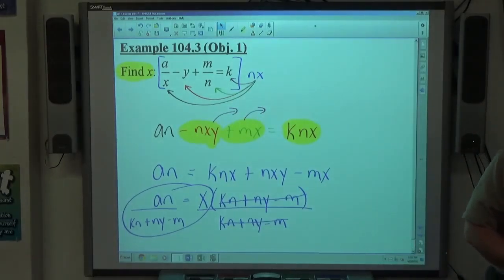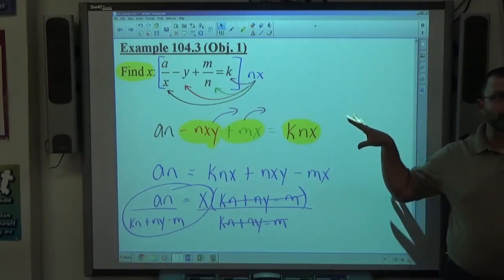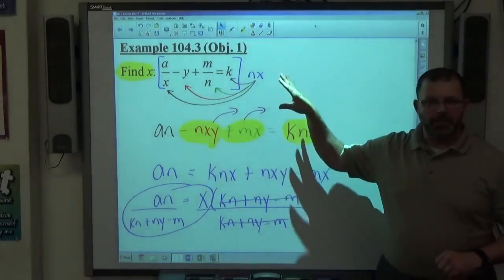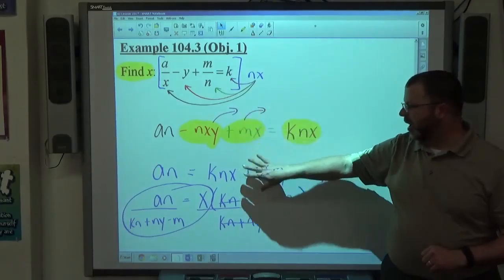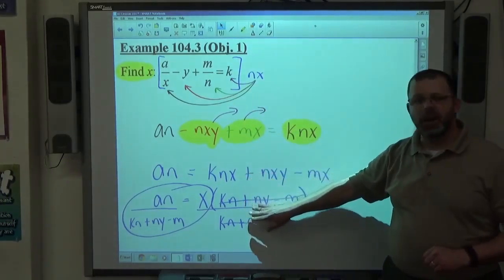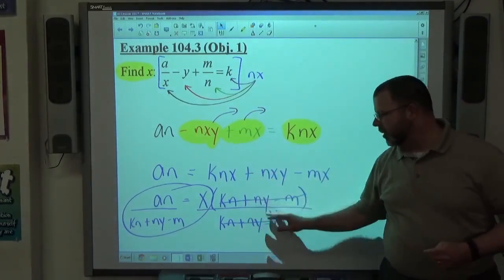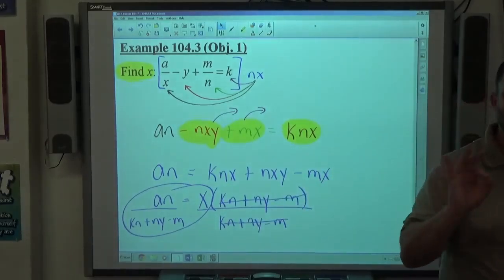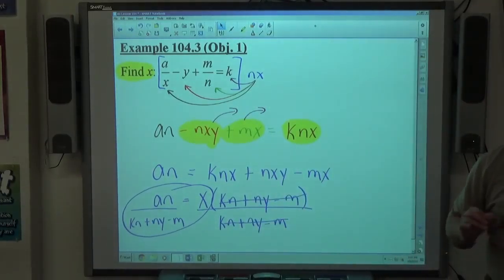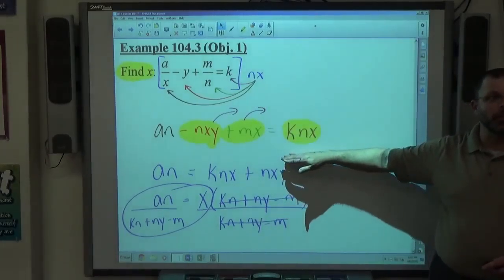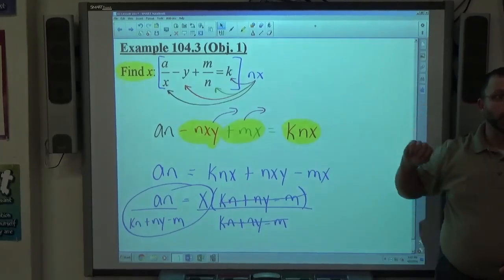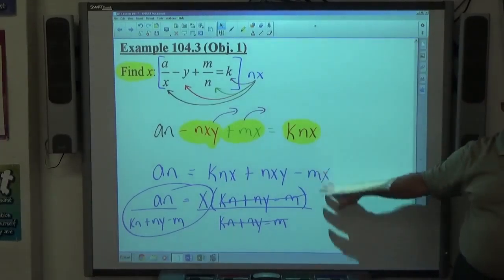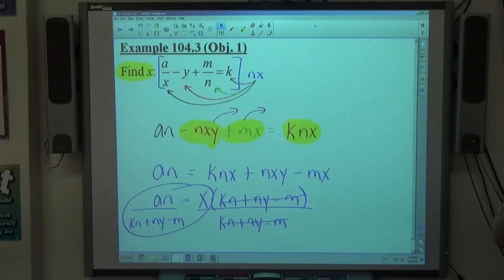These do become more challenging down the road. This is as basic as they're going to get for right now, but again, the basic theme is get rid of fractions, isolate the variable you care about, factor out the common factor that is that variable, divide by the stuff with it, and go through the process each time. Focus on each step as you do it, get really good at this. When we get to the uglier ones, they're still going to get to this same point right here every time. It's just a little uglier stuff going on before that. So once we get to here, every problem is about the same. So really focus on your steps, get good at the process, and these will be pretty easy as we go along.